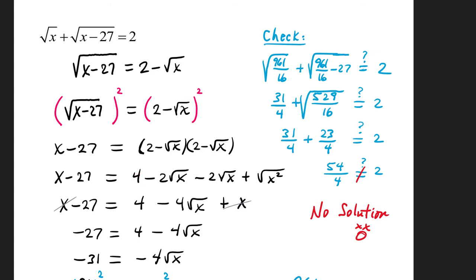That leaves us with 4. These are like terms. There's a total of negative 4 square root of x. And then this last term is just x. Square root and square, they battle it out, and it makes x.